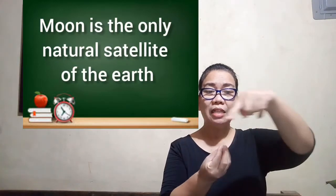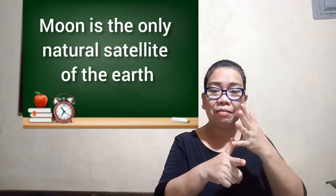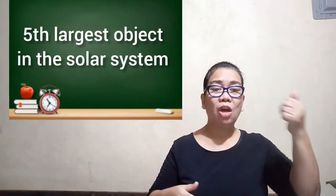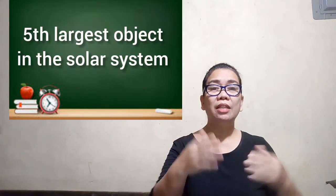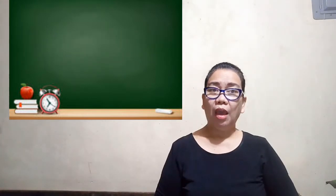The moon is the only natural satellite of Earth. It is the fifth largest object in the solar system and the brightest object in Earth's sky after the sun.